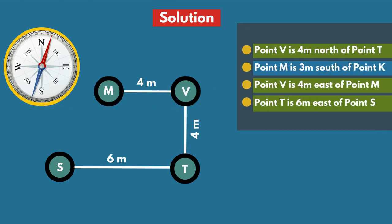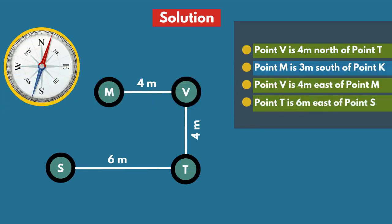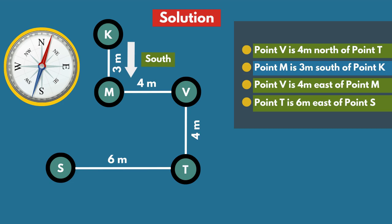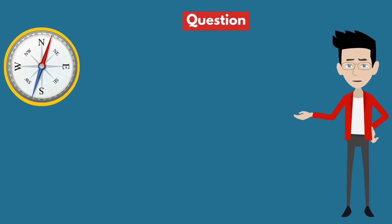Last statement: Point M is 3 meters south of point K. Here, this is point K, and point M is 3 meters south of point K. So, this is the final diagram. Let's see the questions on the diagram.